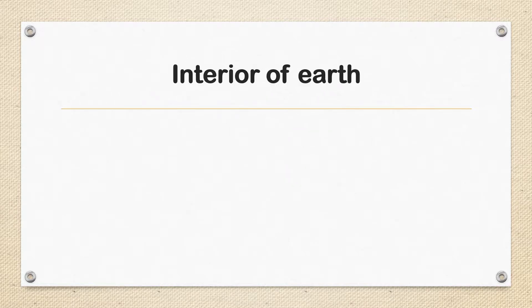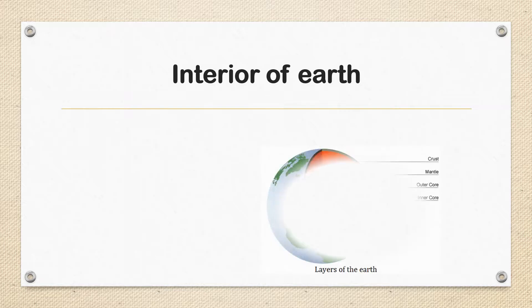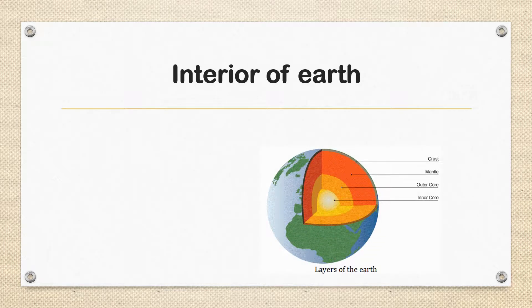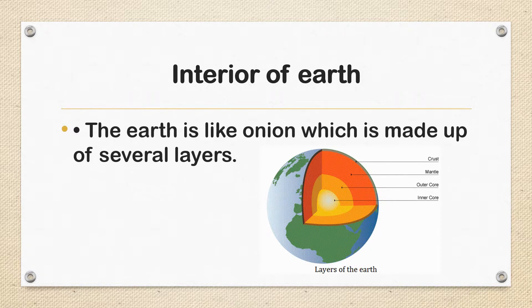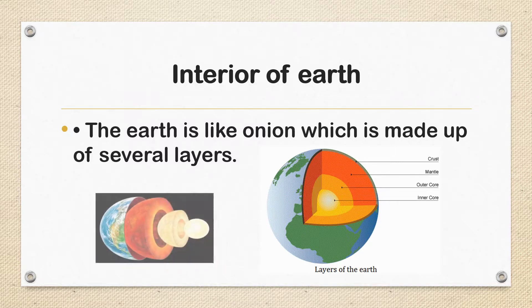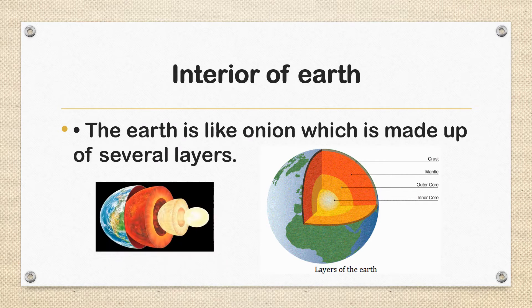Going towards the interior of the Earth, the picture shown on the screen shows the layers of the Earth — that is crust, mantle, outer core, and inner core. The Earth is like an onion, which is made up of several layers.